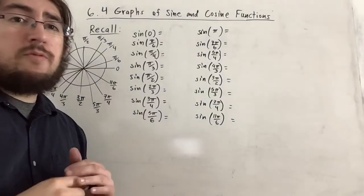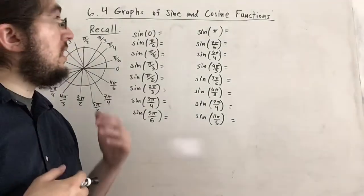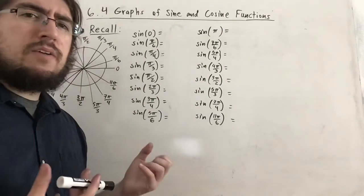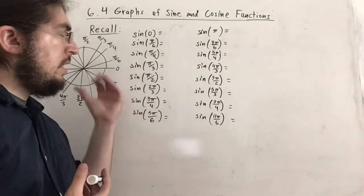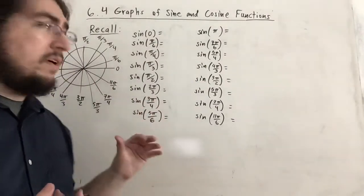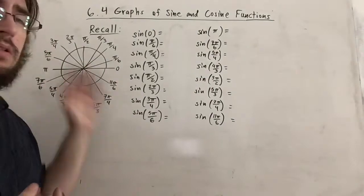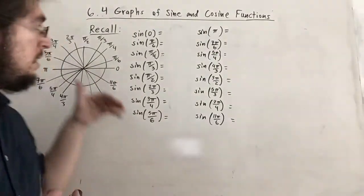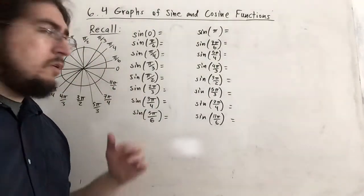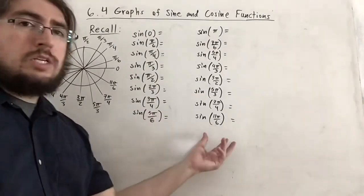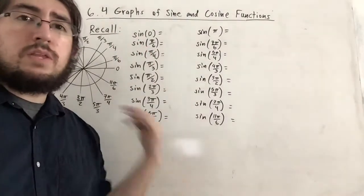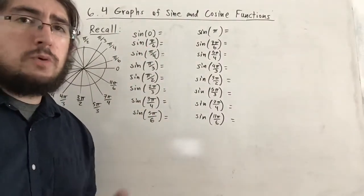Hello again everyone, this is chapter 6.4 where we'll be discussing graphs of sine and cosine functions. I wanted to start off by recalling some sine values — all of the sine values at the special angles in one full rotation of the unit circle. Notice I don't write 2π here because 2π is equivalent to 0 on the unit circle — they're coterminal.